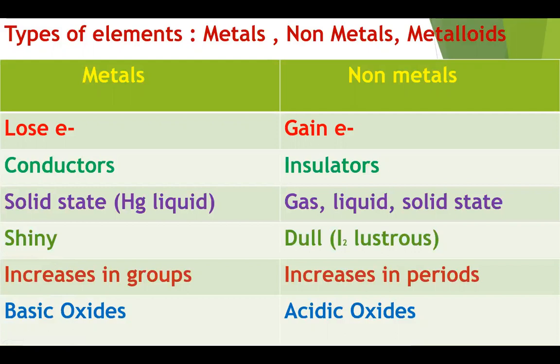The metallic character increases in groups from top to bottom due to the increase of atomic radius. The last and most important point is that metals form basic oxides. In this lecture, we have to focus on this topic: basic oxides.